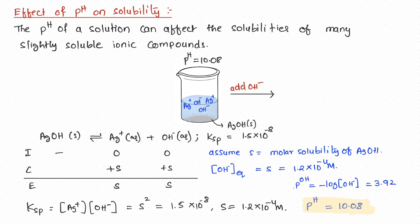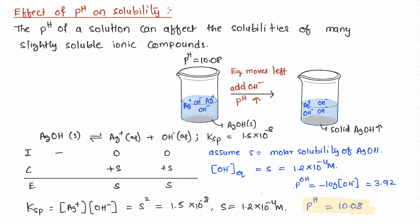Let us say we add a strong base such as sodium hydroxide to this solution. Addition of the strong base increases the pH of the solution. The added OH⁻ ions stress the equilibrium between solid AgOH and its respective ions. As a response, the equilibrium moves to the left, increasing the amount of solid silver hydroxide and decreasing its solubility.